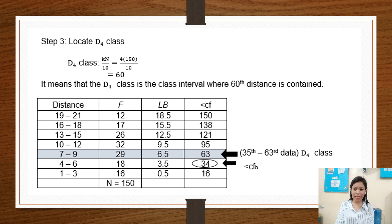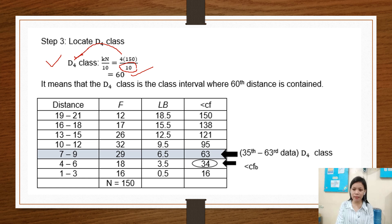Step 3: Locate the D sub 4 class. The formula in finding the D sub 4 class is K times N over 10, which equals 4 times 150 over 10, and the answer is 60. This means that the D sub 4 class is the class interval where the 60th distance is contained. Our 60 falls under the 35 to 63 cumulative frequency range, so 7 to 9 is the D sub 4 class.